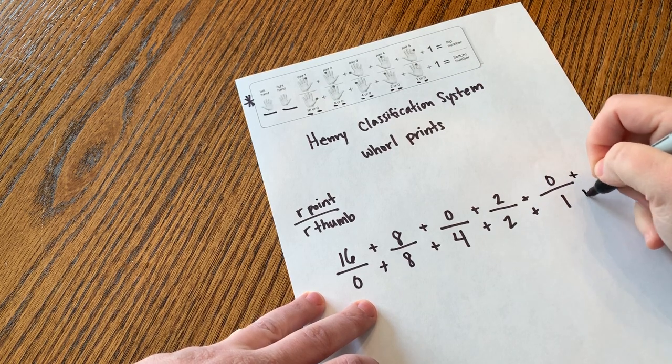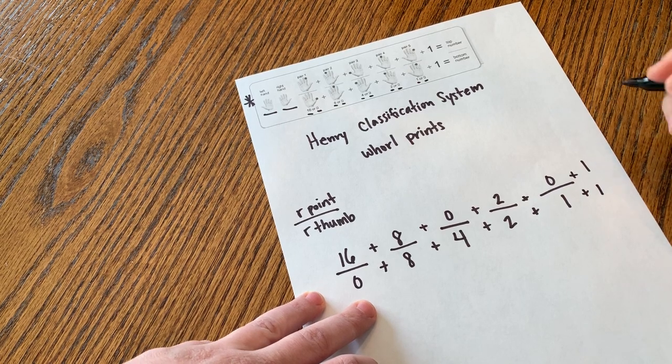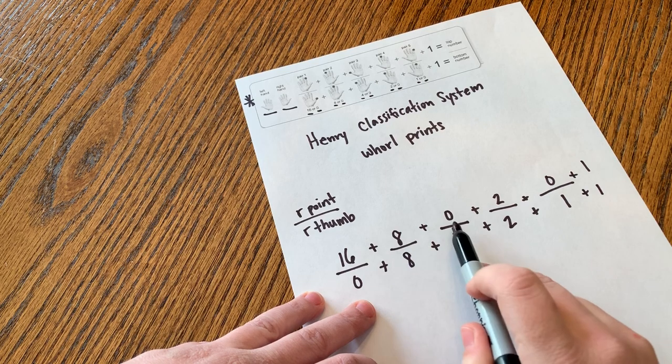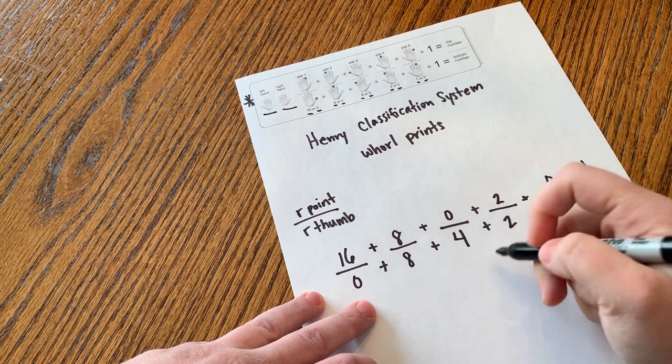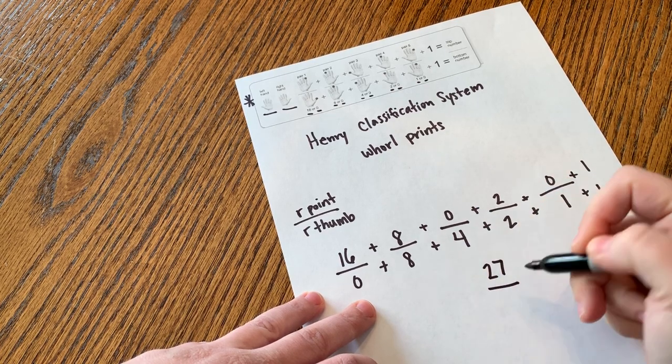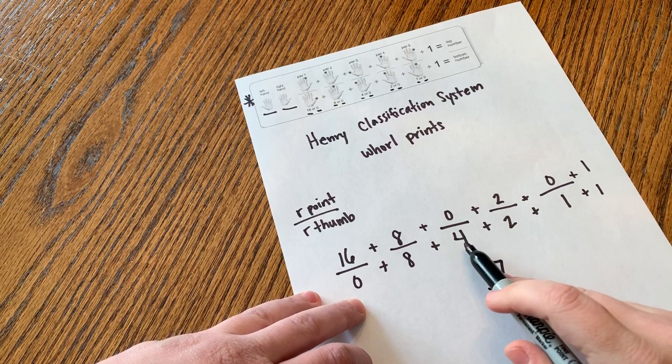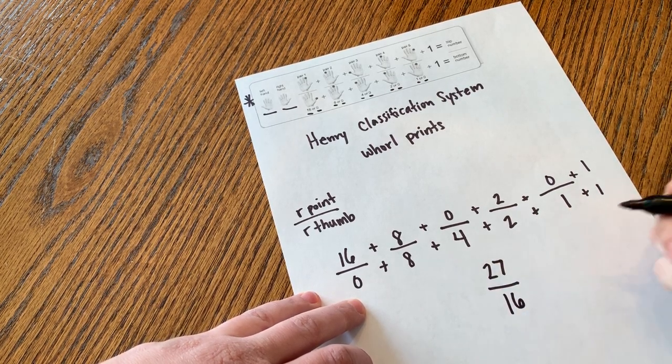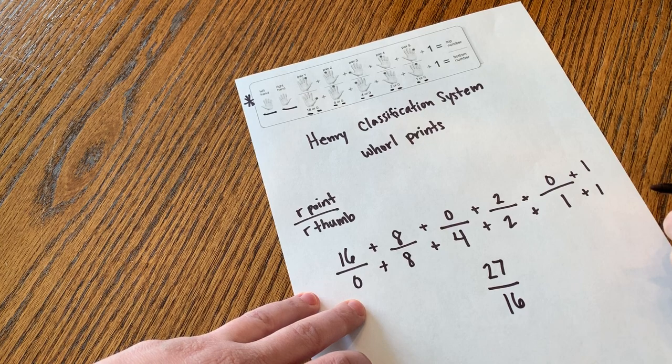At the end of all of this, we're going to add 1 to both the top and the bottom. So now we have a top number of 16 plus 8, 24, plus 0, plus 2, so 26, plus 0, plus 1, 27. And that's going to go over 0 plus 8, 8, then 12, 14, 15, 16. So 27 over 16 is going to be our number for the Henry Classification System.